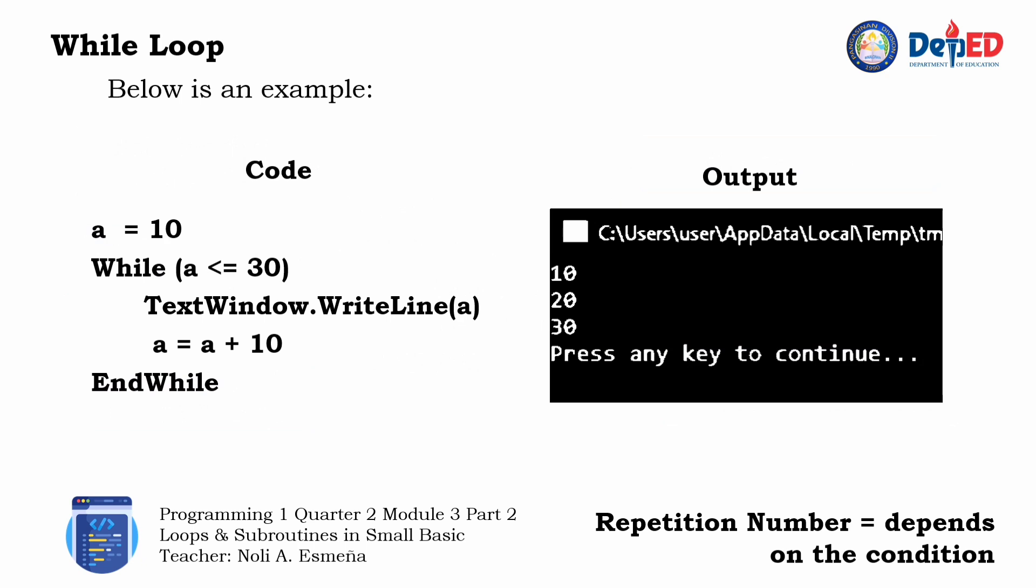As you can see in the output, the loop ends when 30 is printed. This value is printed during the third loop. However, nothing is displayed on the fourth loop because the value of a at the start of that loop is already 40, which is greater than 30. This violates our condition. Thus, the loop ends and the final number that is printed is 30.